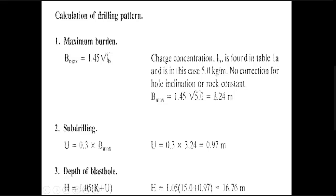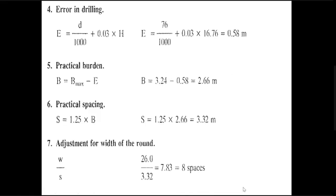By substituting the value from Table 1a, we get a maximum burden of 3.24 meters. The depth of the blast hole is calculated using the formula: bench height plus sub-drilling. Here the bench height is 15 meters and sub-drilling is 0.97 multiplied by 1.05, from which we can calculate the depth of the blast hole.